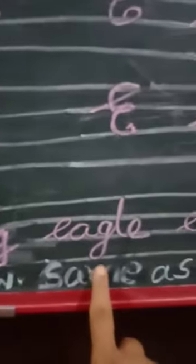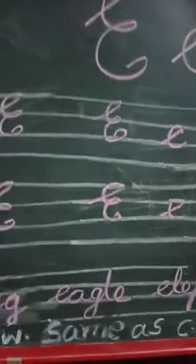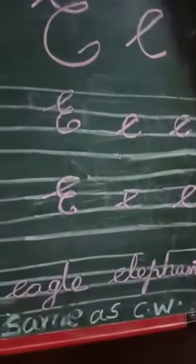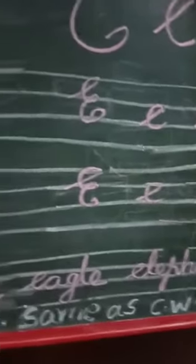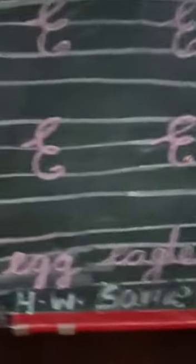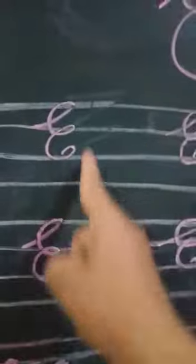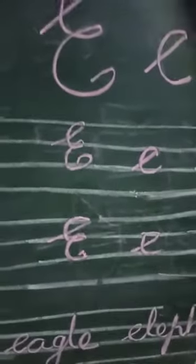We have to write CW notebook and homework also. This is CW properly, E line. This is small E and capital E. Okay, thank you.